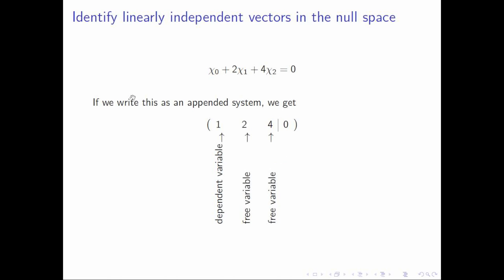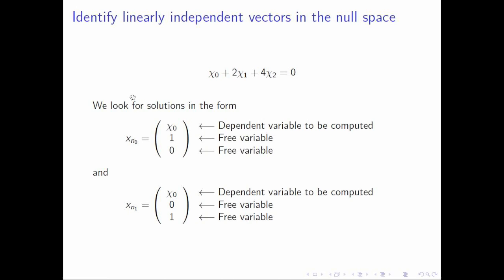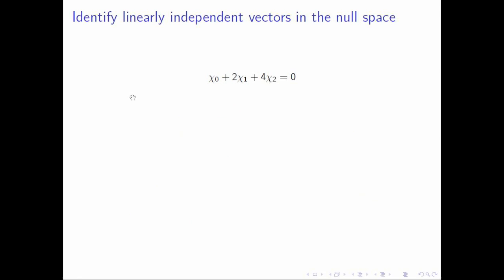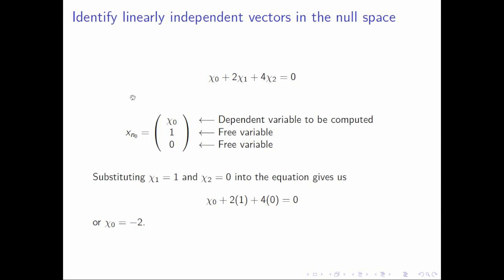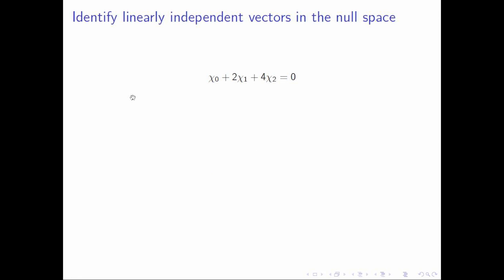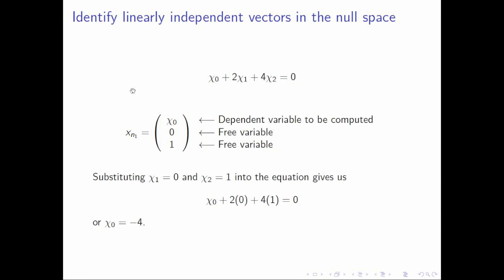And then to find vectors that map to zero, you take the equation, you set the right-hand side to zero, you set the free variables to one, zero and zero, one — and then solve for the dependent variable for two separate vectors. For the first vector, that looks like this, and for the second vector, that looks like this.